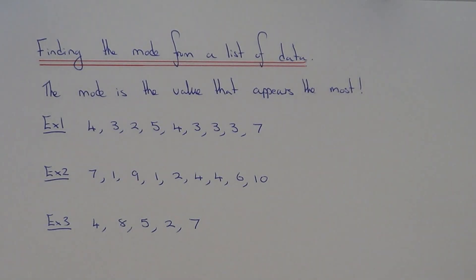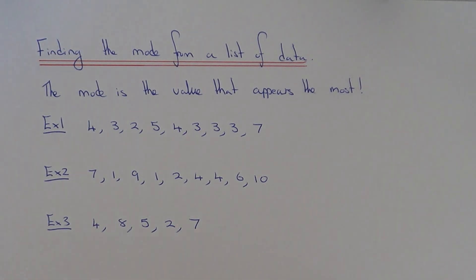The mode is probably one of the easiest averages to find, as it's the number which appears the most in your list.